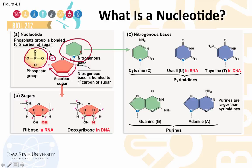These three components make up a nucleotide. The sugar in the nucleotide can be one of two kinds. The first is ribose, which has a hydroxyl group attached to carbon number 2. Nucleic acids that contain ribose as a sugar are called ribonucleic acids, or RNA. Deoxyribose contains a hydrogen linked to the second carbon of the sugar. Nucleic acids that contain deoxyribose as the sugar are called deoxyribonucleic acids, or DNA.